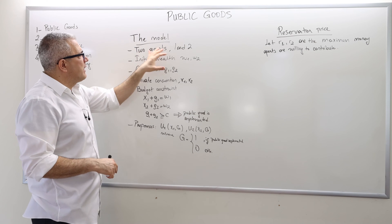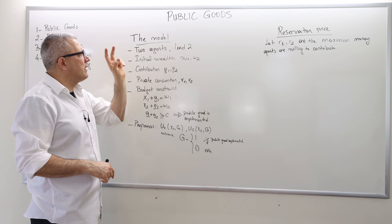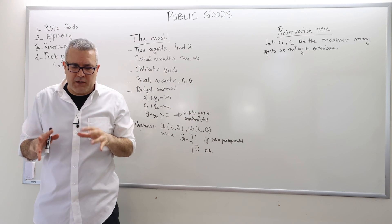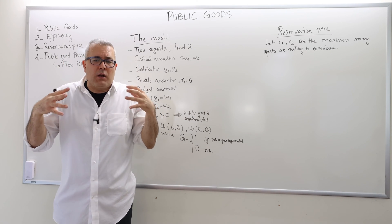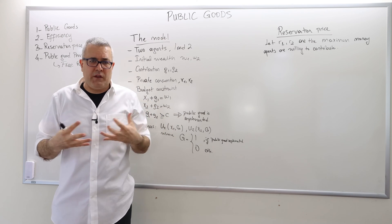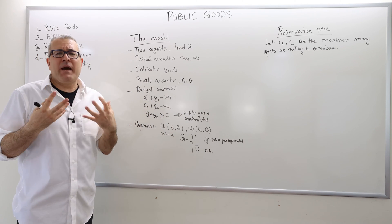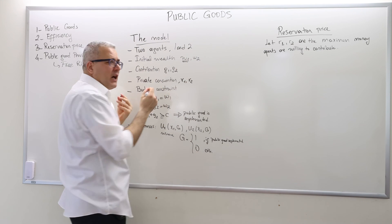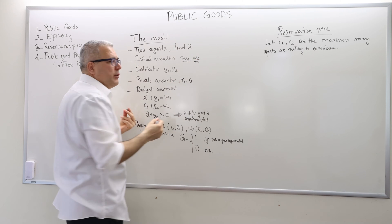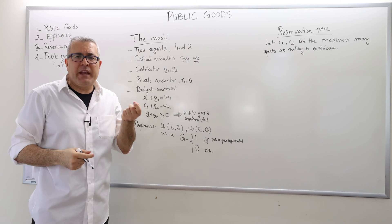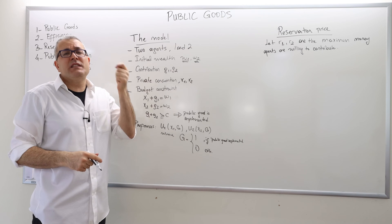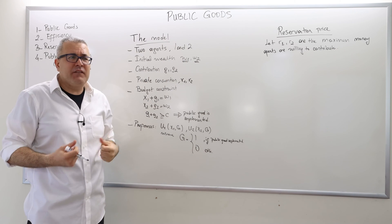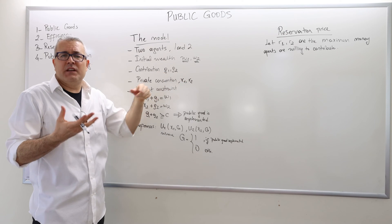So in this model we have two agents — agent one and agent two. What do they bring into this market? Those agents are born with some wealth, some money. Initially, agent one brings W1 dollars and agent two brings W2 dollars. These are dollar amounts — their income, their wealth.